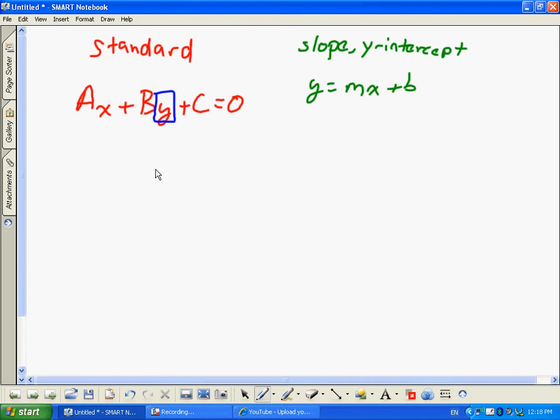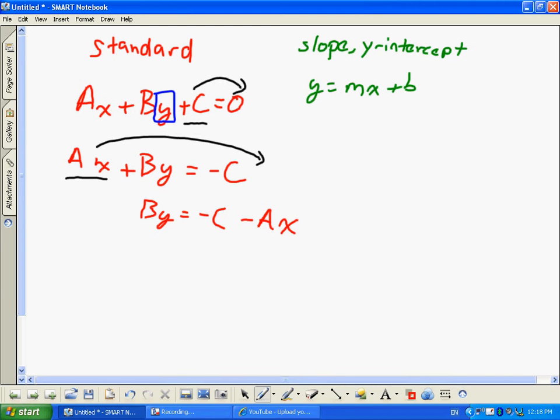In order to do this, I'll do this slowly because I know this is a bit different for you guys. I'm going to move C to the other side of the equation. I'm going to do it one step at a time. By is equal to, when I move C to the other side of the equation, what's it going to become? Negative C. Now, I'm going to move my Ax to the other side of the equation.